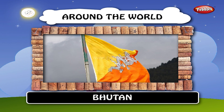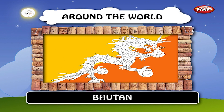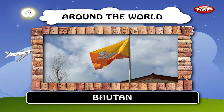The dragon depicted on the flag, Druk, represents Bhutan's local Tibetan name — the land of the dragon. The dragon grasps jewels, representing wealth in its claws. The yellow field symbolizes the secular monarchy, while the orange represents the Buddhist religion.